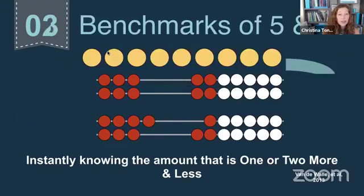The third one is the benchmarks of five and 10. So taking that visual idea, we want to have visuals, but the visuals matter. So I could have a string of nine things and say that's a visual representation of nine. It is. But it doesn't help me develop what nine really is in relationship to other things. And the benchmarks of five and 10 are really, really huge.